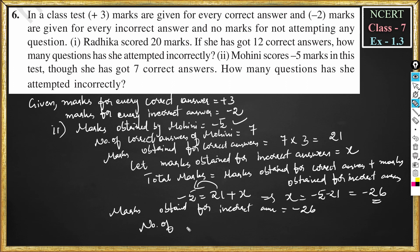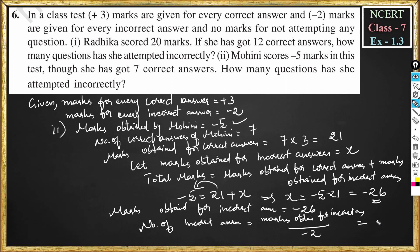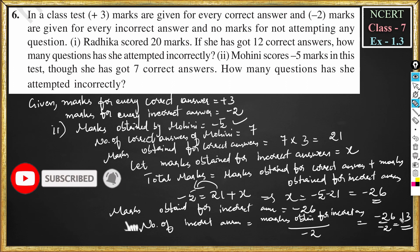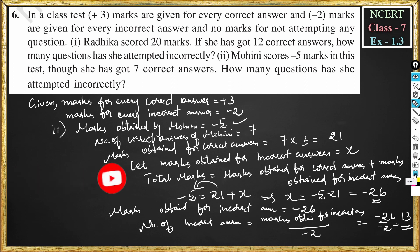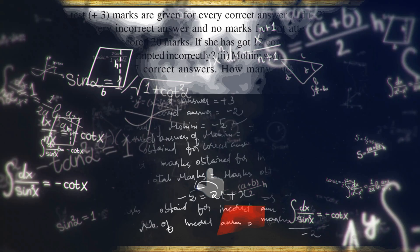Number of incorrect answers = marks obtained for incorrect answers ÷ (−2), because −2 is the mark for every incorrect answer. So: −26 ÷ (−2) = 13. Therefore, Mohini attempted 13 questions incorrectly.